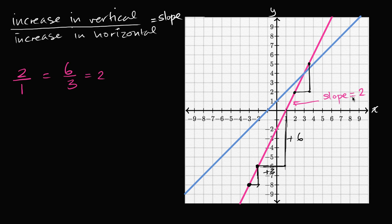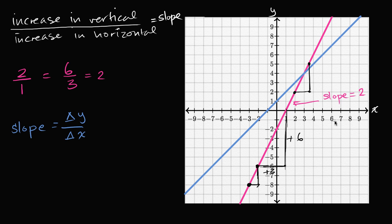One way to interpret a slope of two: for whatever amount you increase in the horizontal direction, you're going to increase twice as much in the vertical direction. Now let's look at the blue line. I'll rewrite the definition of slope using notation you'll typically see: what is our change in vertical for a given change in horizontal? In this coordinate plane, vertical is the y coordinate and horizontal is the x coordinate, so slope is change in y divided by change in x.